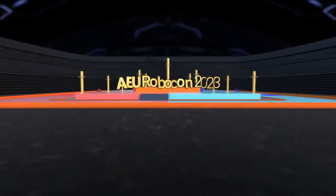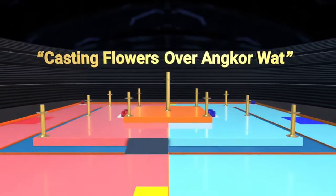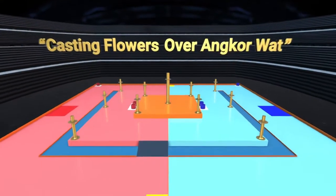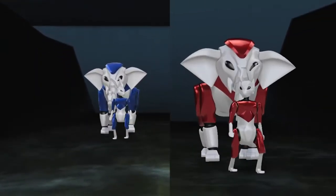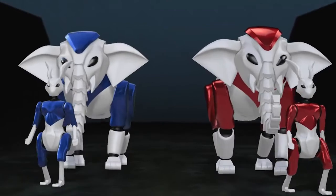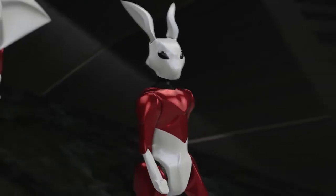ABU Robocon 2023, Phnom Penh, Cambodia's contest theme is Casting Flowers Over Angkor Wat. The game will be participated by two teams, red team and blue team. Each team has two robots, namely elephant robots and rabbit robots. Both robots can be either manual or automatic.